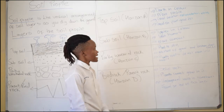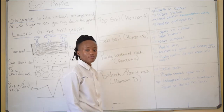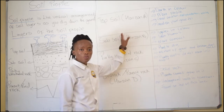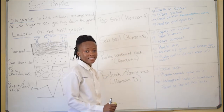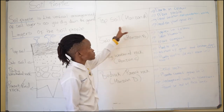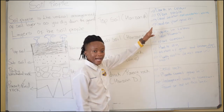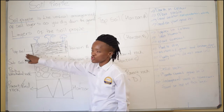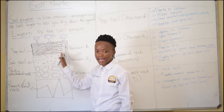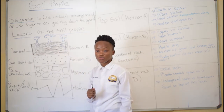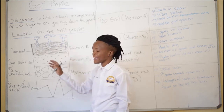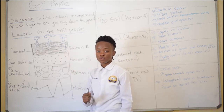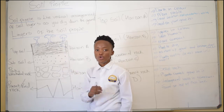We'll start with the topsoil, which is also known as Horizon A. Topsoil is dark in color. As we can see from this sketch, topsoil is dark in color. This darkness shows that topsoil has a lot of humus. When you talk about humus, we mean it has a lot of nutrients.